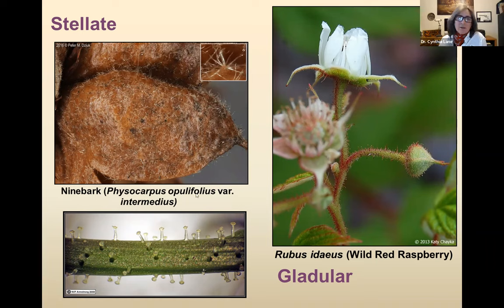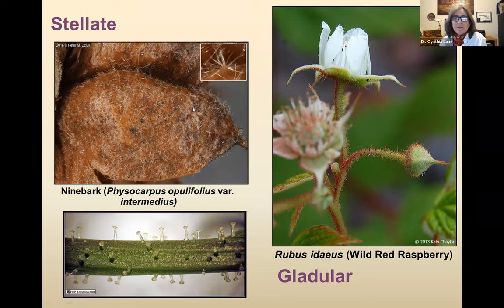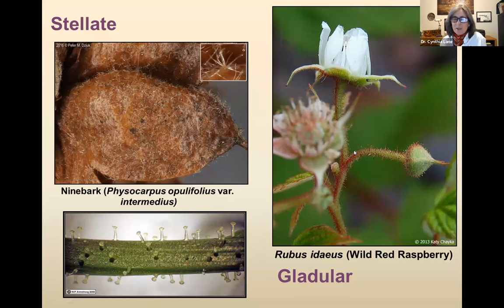For stellate hairs, ninebark has a variety called intermedius, and one of the characters to identify that variety is stellate hairs. If you look, this is part of the dried fruit and has little stellate hairs all over it. Another type we talked about was glandular hairs — wild red raspberry has really cool glandular hairs that can be kind of reddish. Here's a close-up of a glandular hair, not specifically the raspberry.